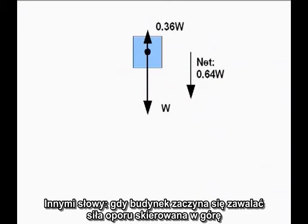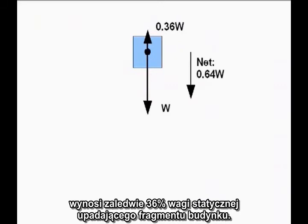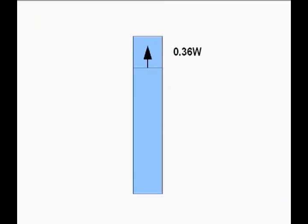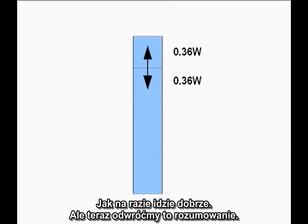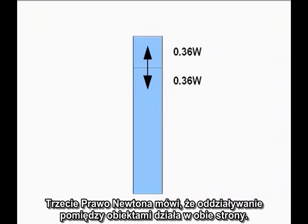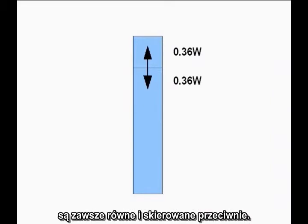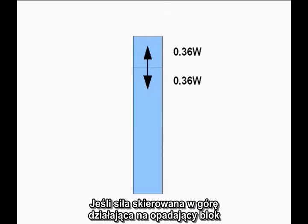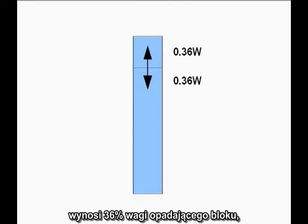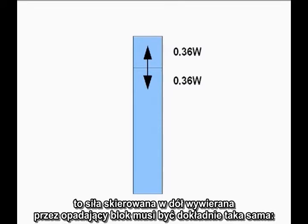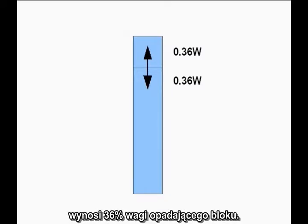In other words, once it starts falling, the upward resistive force is only 36% of the weight of the falling section of the building. Newton's Third Law says interactions between objects work both ways — the forces two objects exert on each other are always equal and opposite. If the upward force acting on the falling block is 36% of the weight of the falling block, the downward force exerted by the falling block must be exactly the same: 36% of the weight of the falling block.